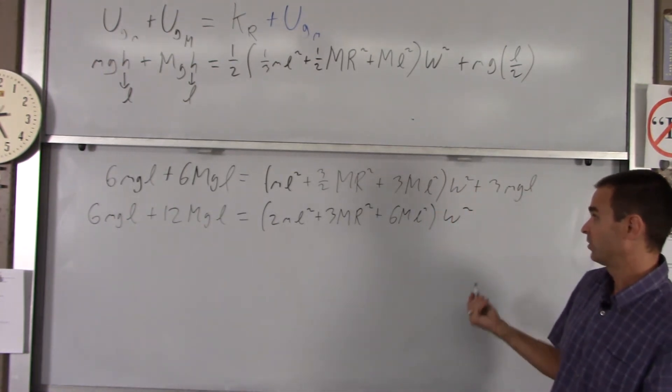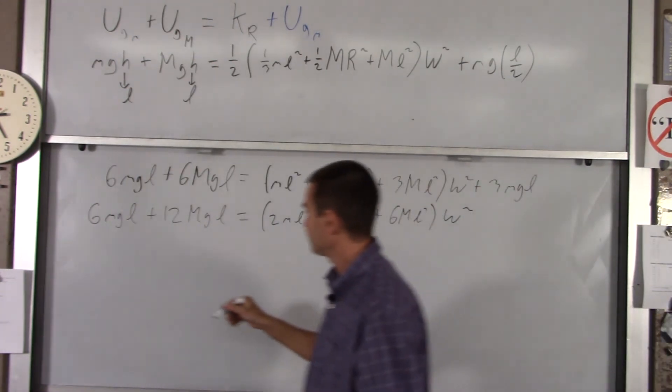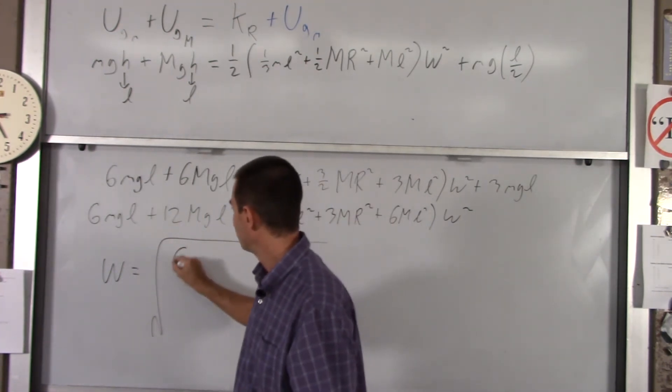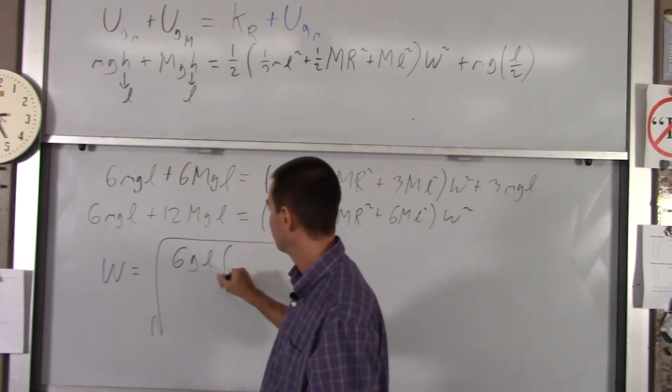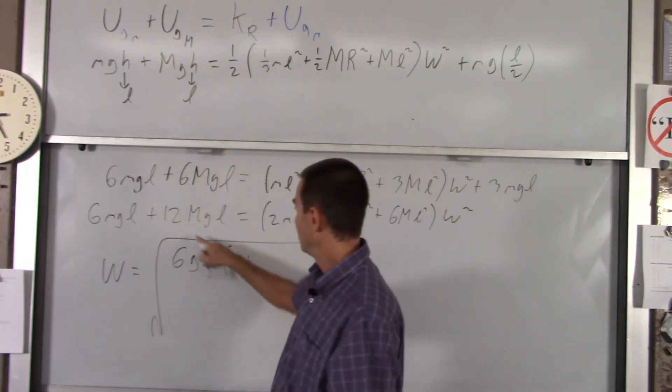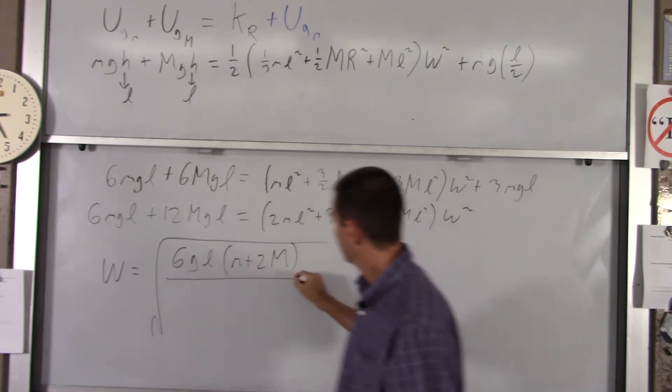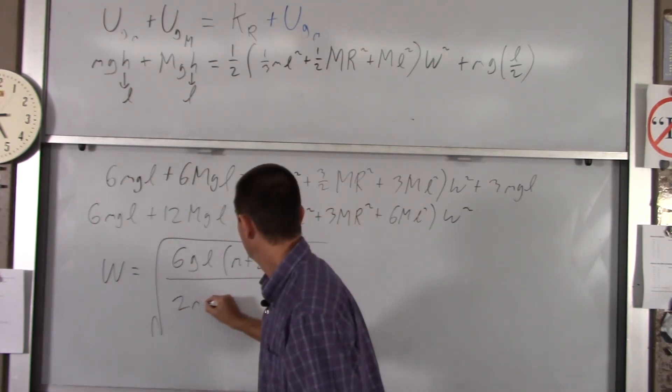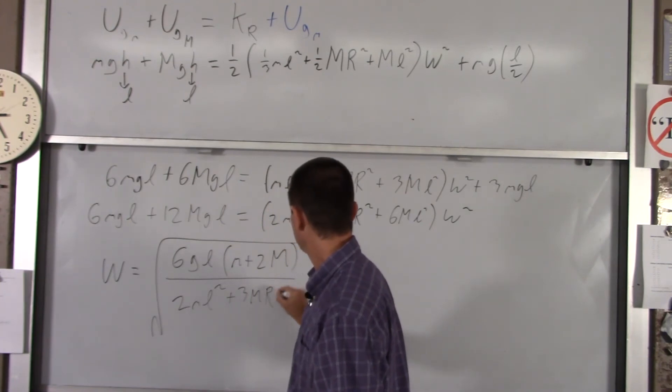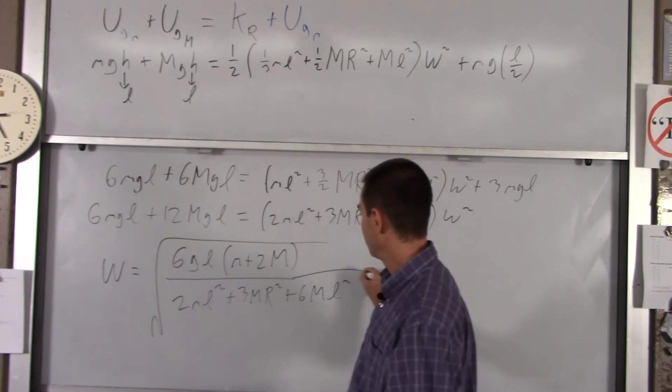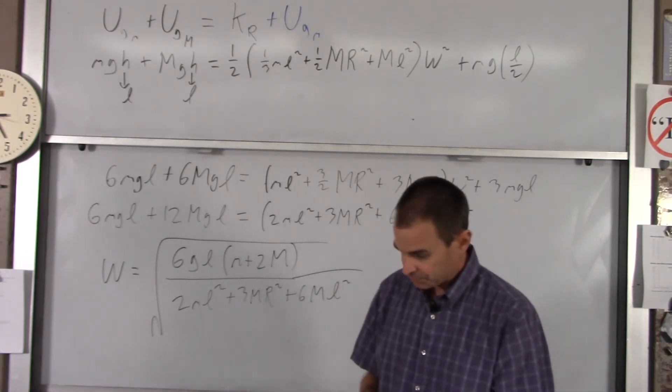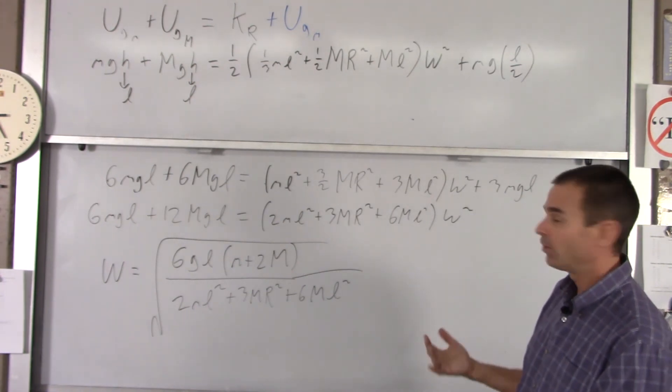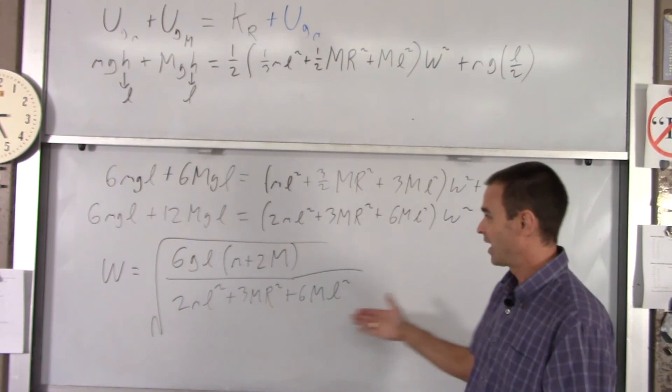If you divide everything by that, you get omega, and then you square root. Over here, I'll factor some stuff out. I can take a six out of both terms, a g out of both terms, and an L out of both terms. You're left with little m and then two big M's. For this, there's nothing I can take out of all three terms, so I'm just kind of stuck with it: 2mL squared plus 3Mr squared plus 6ML squared. These two are big M's, that one's a little m. So that would be the final rotational velocity of your lollipop when it got to the bottom of its path.